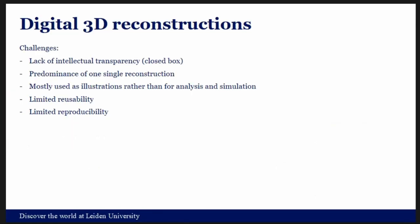When we talk about digital 3D reconstructions, there are a few challenges. The first is the lack of intellectual transparency — 3D reconstructions of archaeological evidence are sort of closed boxes and you can't really see what the data are, what the interpretations are, or where the distinction and boundaries between the two lie. There is usually the predominance of one single reconstruction, which doesn't account for alternative interpretations of the archaeological record. 3D reconstructions are also mostly used traditionally as digital counterparts of traditional illustrations, not really exploited as tools for research and analysis.